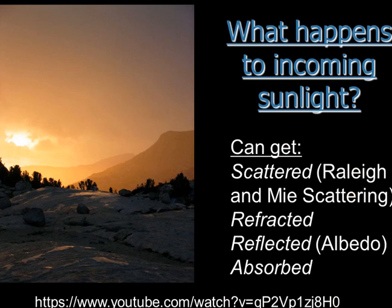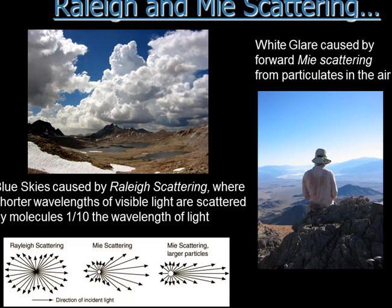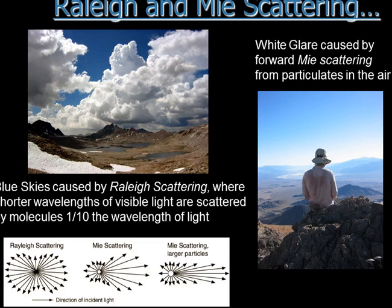Rayleigh scattering generates our blue sky. When the shortwave energy that we can see comes in from the sun to our planet, the red, green, blue, and yellow light mostly goes through the atmosphere no problem. But blue happens to be at the right wavelength that it starts impacting molecules in the atmosphere. When it impacts those molecules, it scatters — it gets shot all over the atmosphere like pinballs — and that generates the blue sky wherever you look.